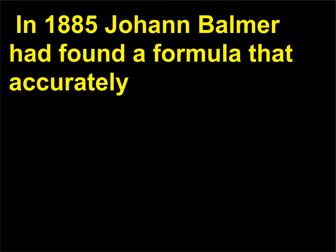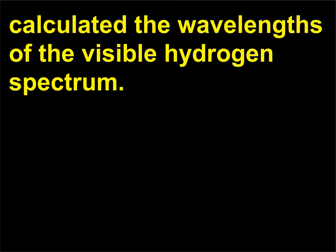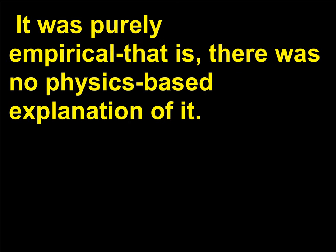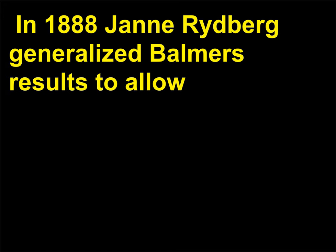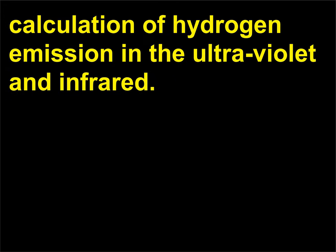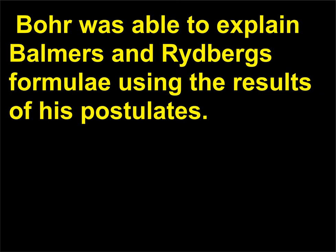In 1885 Johan Balmer had found a formula that accurately calculated the wavelengths of the visible hydrogen spectrum. It was purely empirical — there was no physics-based explanation. In 1888 Johan Rydberg generalized Balmer's results to allow calculation of hydrogen emission in the ultraviolet and infrared. Bohr was able to explain Balmer's and Rydberg's formulae using the results of his postulates.